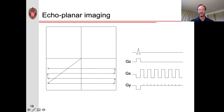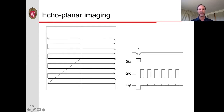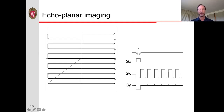The benefit of EPI is that within a single RF excitation we're acquiring the entire image — very efficient. Whereas the gradient echo technique takes several minutes to acquire a whole volume, in EPI we're acquiring the entire slice in about 20 to 40 milliseconds, and the entire volume of the head in approximately one to two seconds, depending on the resolution.